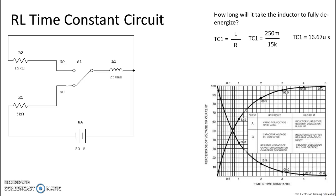All right, let's put those numbers in. So 250 milli for L1 divided by 15k, which is R2, gives us a time constant of 16.67 microseconds.